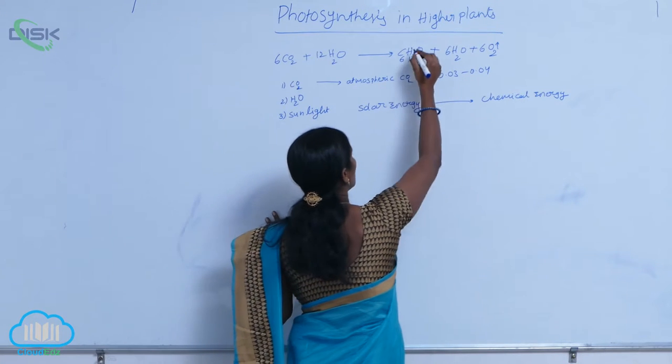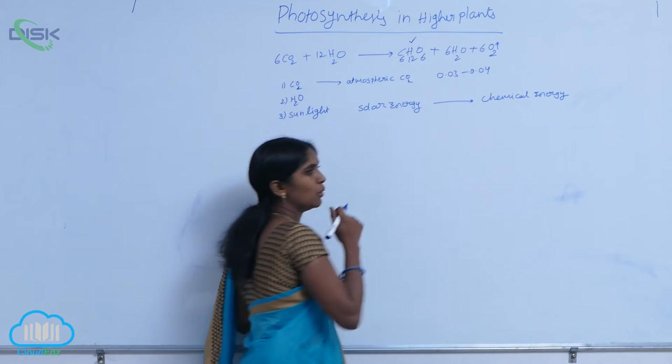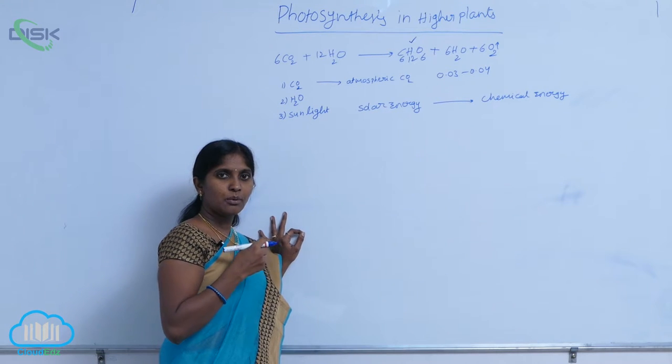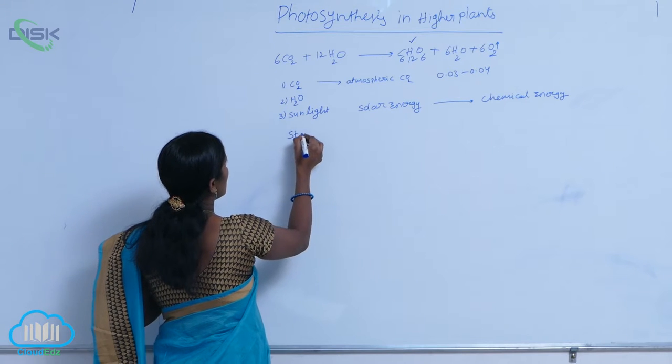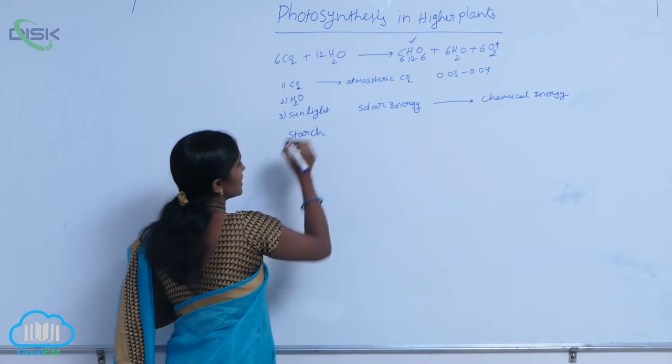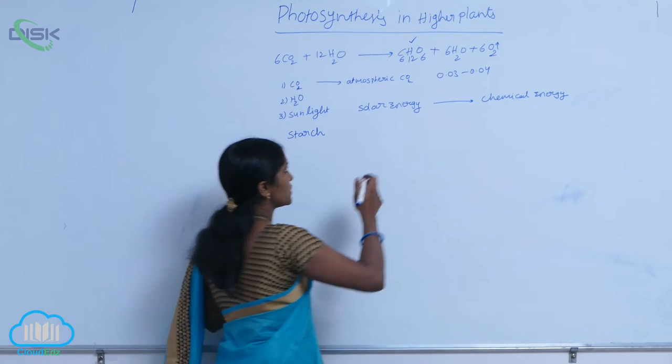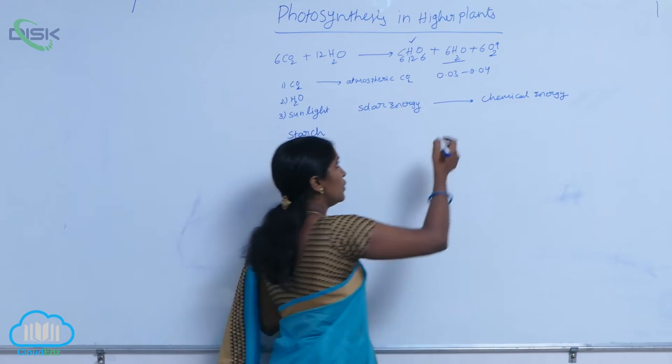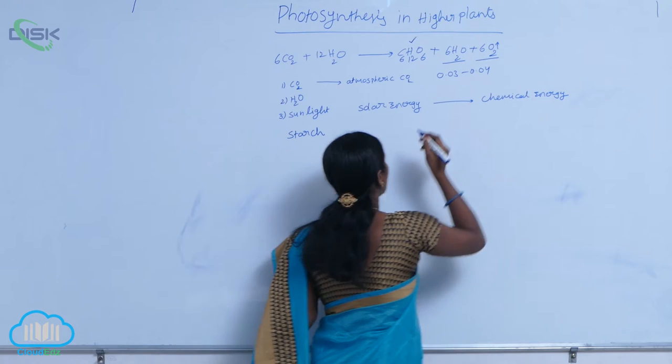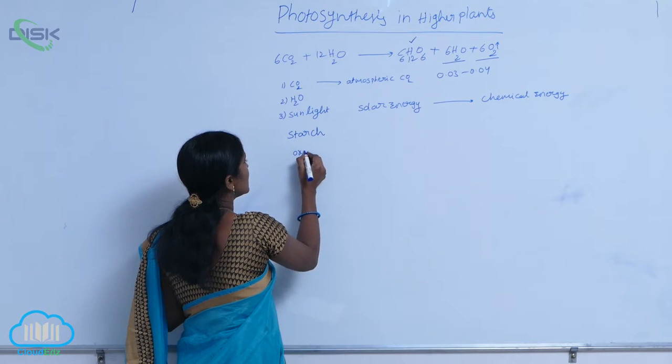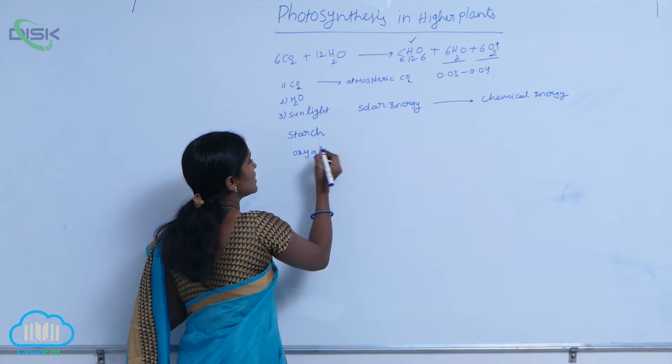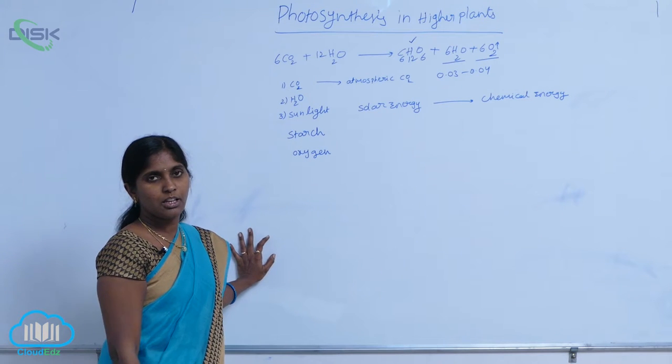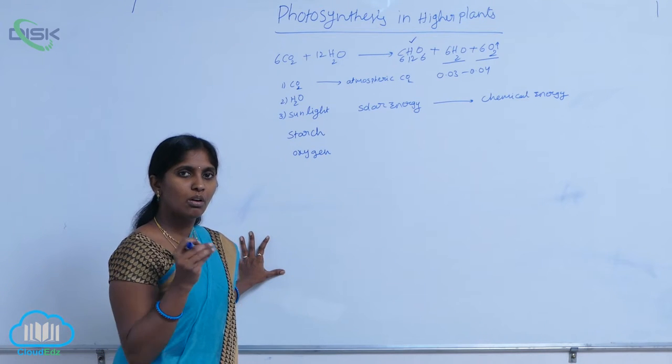The first product is carbohydrates. Carbohydrates in the form of starch. So they are produced, and water molecule is released. And what is the next product? That is oxygen. Oxygen is released, it means oxygen is evolved.